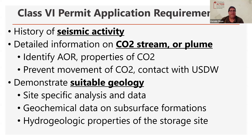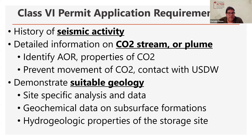There are some application requirements related to the Class 6 permit. First of all, seismic activity in the area; detailed information on the CO2 stream or CO2 plume, which Dan and Steve will be talking about. We're talking about CO2 after it's injected into those aquifers, those brine formations, where it will migrate over time. So detailed information on identifying the AOR — the area of review — where they expect the CO2 to migrate over time; chemical properties of CO2; reviewing and preventing movement of CO2 and minimizing contact with drinking water. And then there's also demonstrating suitable geology, which many of us believe Wabash Valley Resources has not yet done with respect to their two proposed sites.